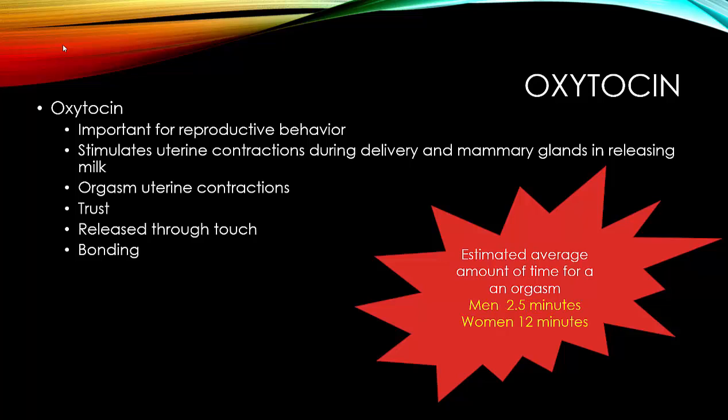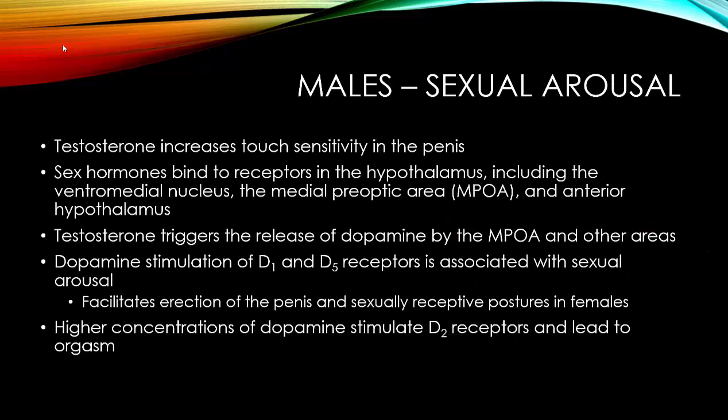The estimated average time for an orgasm in men is 2.5 minutes; in women it's 12 minutes. This is really important for males to recognize: she needs to trust you, you need to take your time with her and touch. She may need a lot of touch and feeling bonded — this will all improve her chances of having good sexual relations and an orgasm.